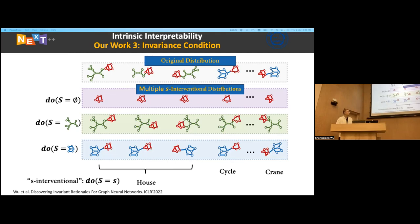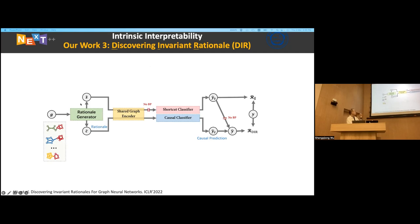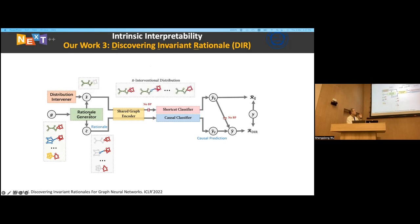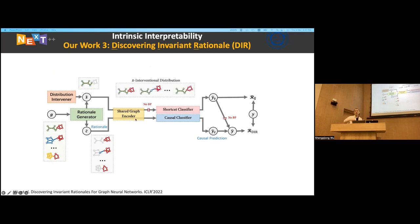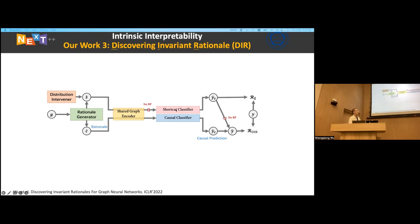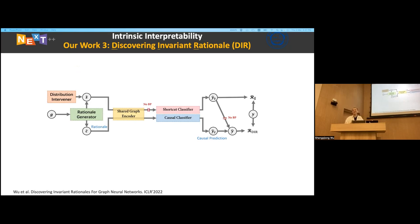Great question. Actually we don't do it in the graph rule space — we do it at the representation level. We take the whole graph G, divide it into two parts C and S in the real graph form, feed it into a shared graph encoder to get their representations, and only change the representation of the environmental features with the causal part. Then we combine their representations — not the subgraphs directly. It's not that elegant, but it somehow works.